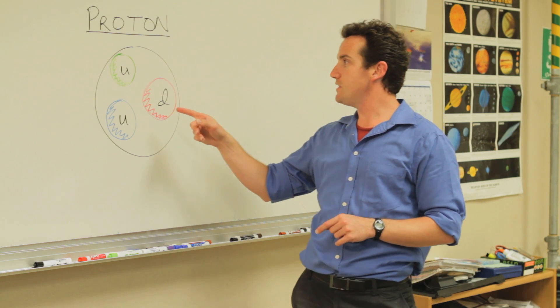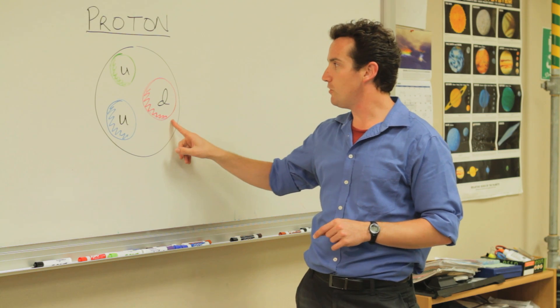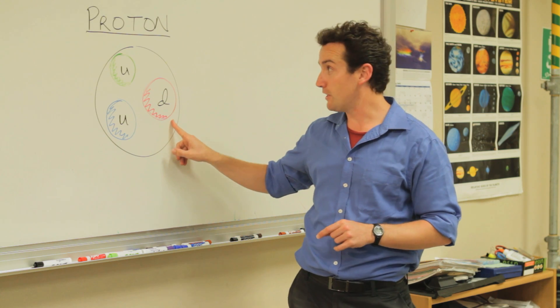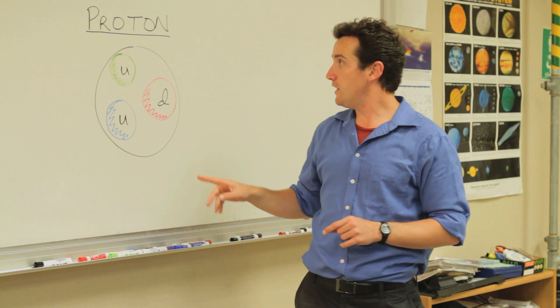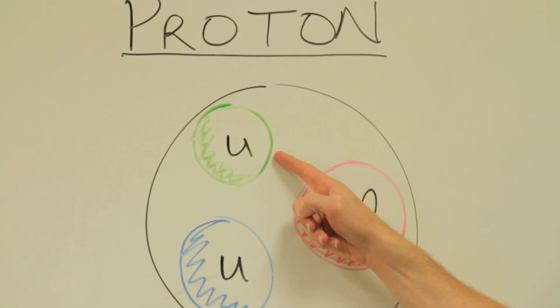In this diagram, you can see that I've drawn three smaller particles inside of the proton. These are called quarks. I've also colored the quarks red, green, and blue.